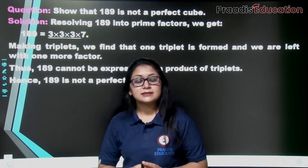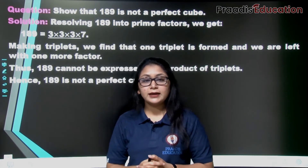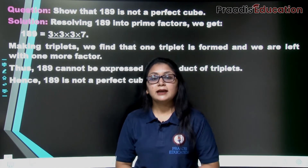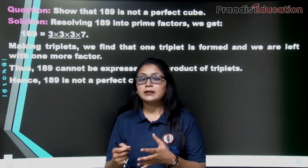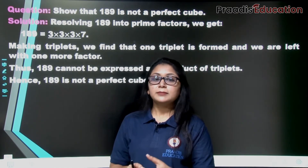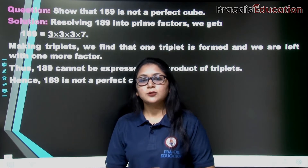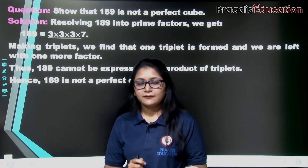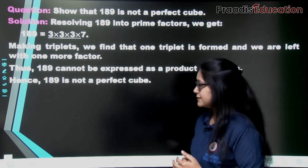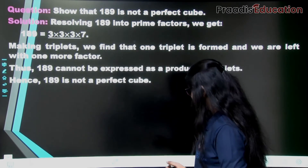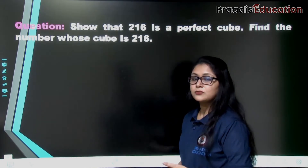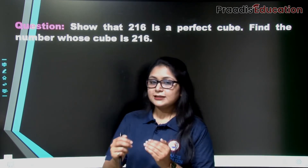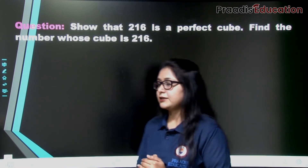So we have found out that this number is not a perfect cube because not all factors formed triplets. That means the number is not a perfect cube — it is not the cube of any number. Very easy, right? If we know how to find prime factors, then squares and cubes all become a little easier for us.